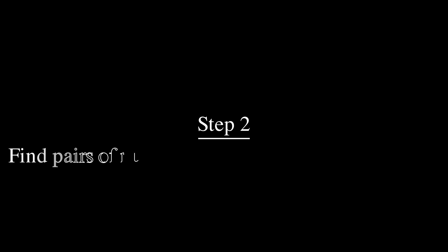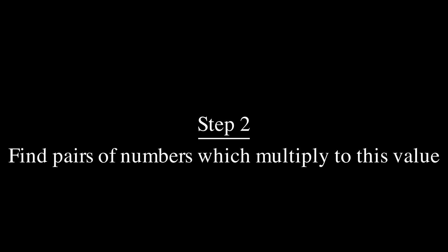Step two is to try to find all of the pairs which multiply to this number. Now it turns out you don't really need to find all of them but go ahead and write down as many numbers as you can that multiply to the magenta value for now. Pause the video and resume when you're ready to continue.